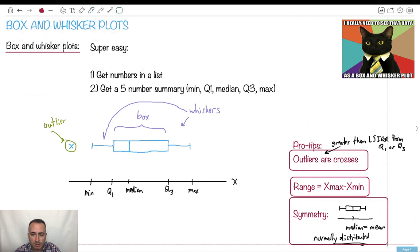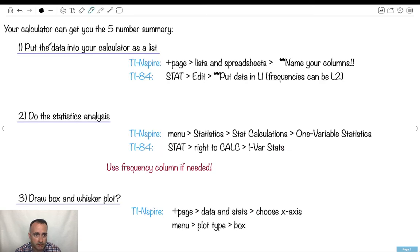So how do we go about doing these in practice? It's surprisingly easy. All you have to do is get the numbers on the list and get the five-number summary. So in case you've forgotten, here's how you do it. You put it all into your calculator, depending on if you have the Inspire or the 84. You put the stuff into a list. You name your columns. Or this one here, you go stat, edit, and put it in L1. If you have frequencies, they're L2.